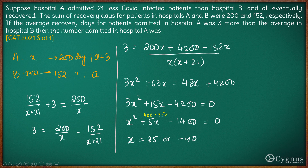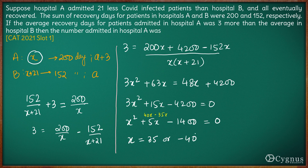Since x represents the number of patients in hospital A, x = −40 is not valid. Therefore, the number of patients admitted in hospital A is 35. That is the answer to this question.